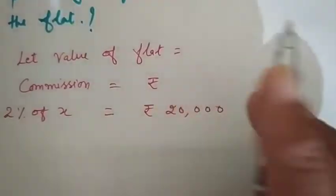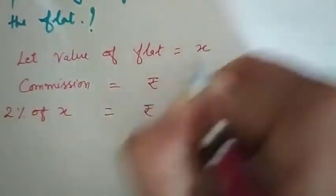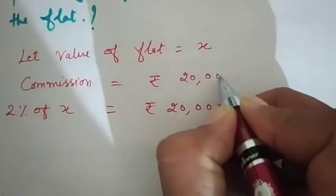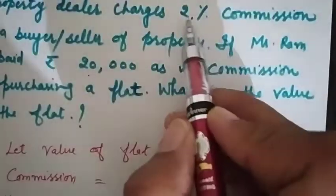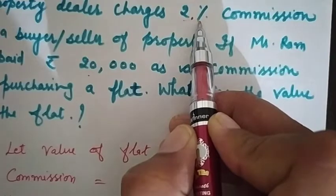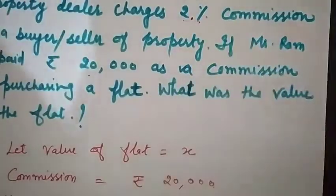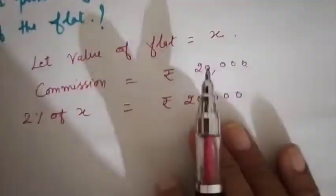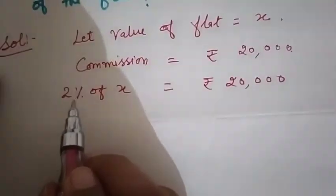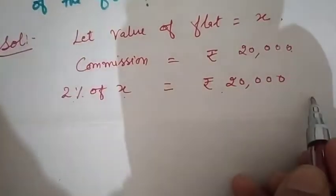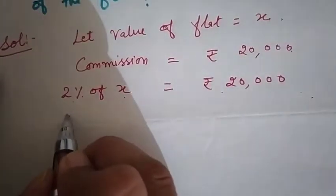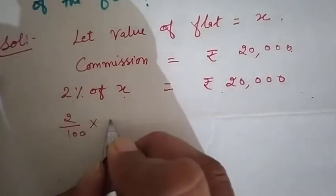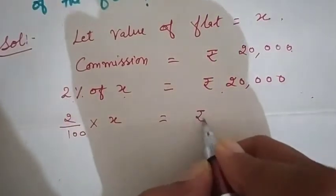हमें flat की value नहीं दी हुई, तो अब हम क्या करेंगे — flat की value हम मान लेते हैं कि वो x है। Commission कितना है — 20,000। और ये 20,000 commission जो है वो total property की value का 2% है। तो total property की value x है, और 2% of x = 20,000। इसको equation बनाते हैं: 2% of x = 20,000, यानी 2/100 × x = 20,000।